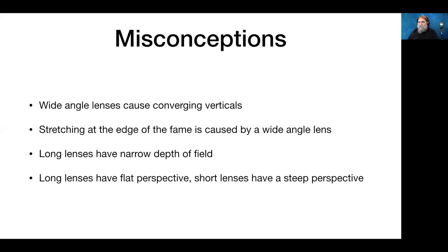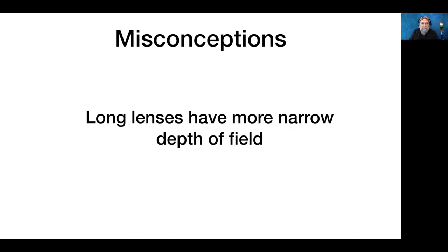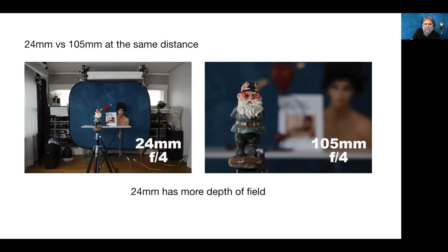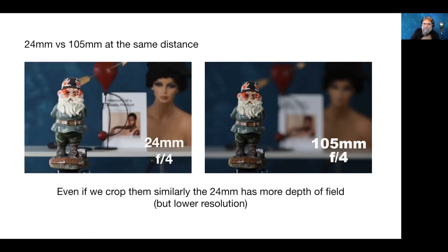More misconceptions: people say wide-angle lenses cause converging verticals or stretch the edges, or that long lenses have narrow depth of field or flat perspective. Do long lenses give less depth of field? A photo made with a 24mm lens does have a lot more depth of field than one made with a 105mm — so there is truth to that. But if you move the camera in to make the subject the same size in the frame as it is in the 105mm photo, the depth of field is virtually the same.